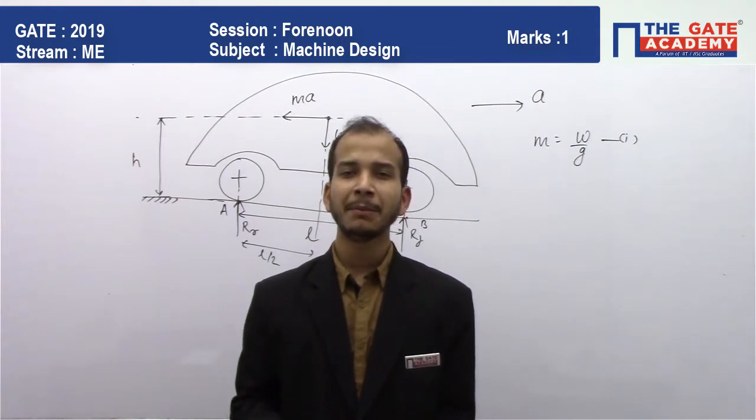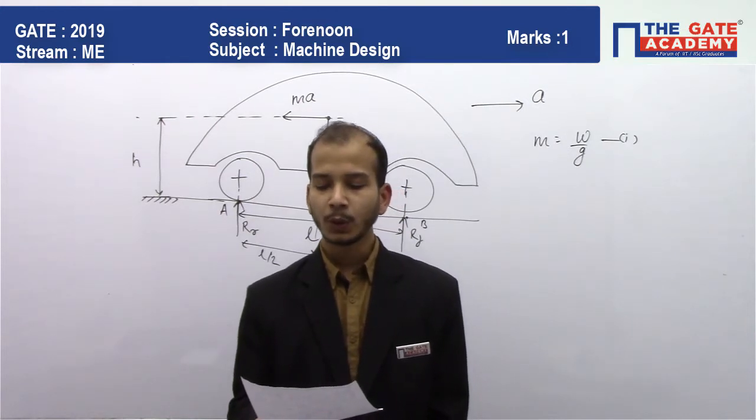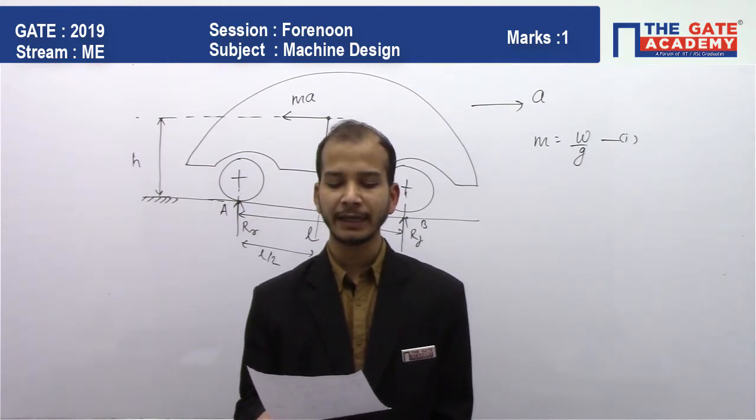Specifically, we'll talk about the d'Alembert principle. The question is: a car of weight W is having its center of gravity at height h.